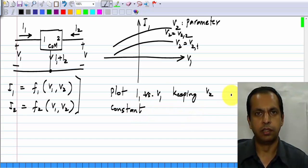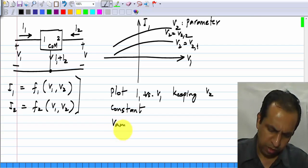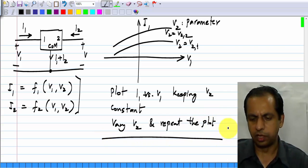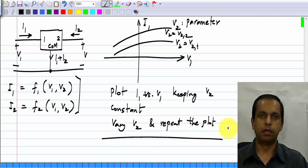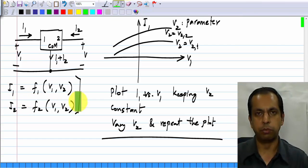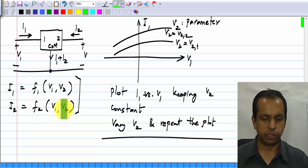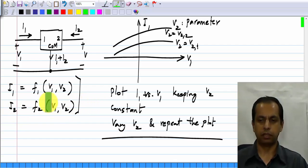Basically, plot I1 versus V1 keeping V2 constant. That is a two dimensional plot, one variable versus another variable and then vary V2 and repeat the plot. So basically you get a family of curves and exactly the same thing can be done and clearly you can see that there are four possible plots: I1 versus V1 with V2 being constant, I1 versus V2 with V1 being constant, similarly I2 versus V1 with V2 being constant and I2 versus V2 with V1 being constant.